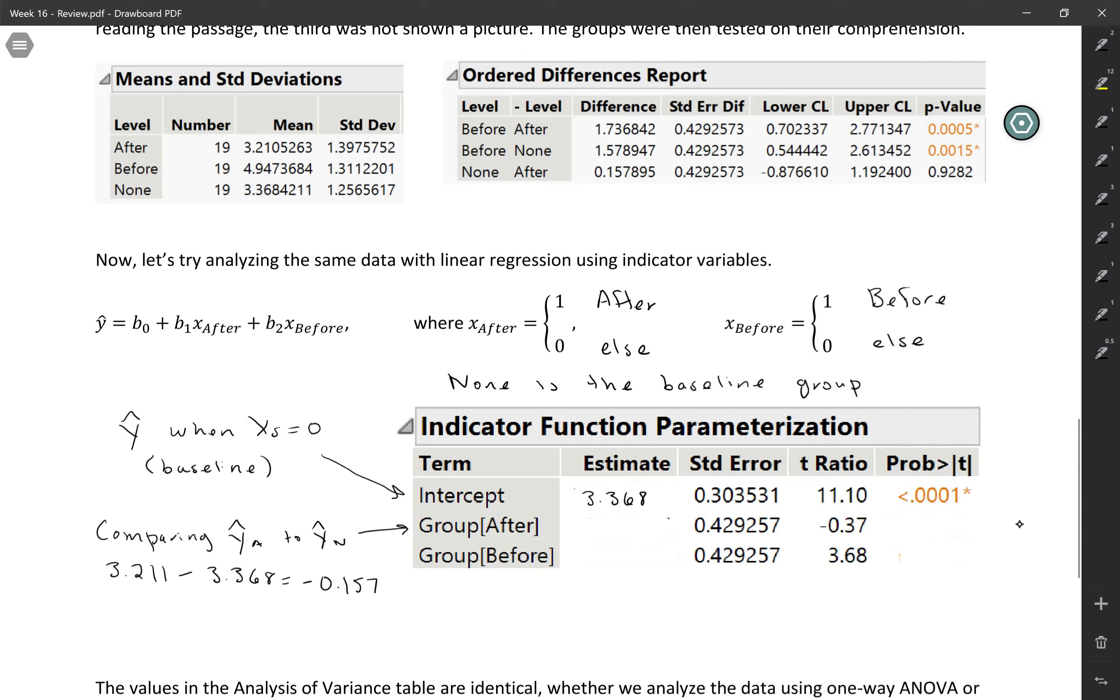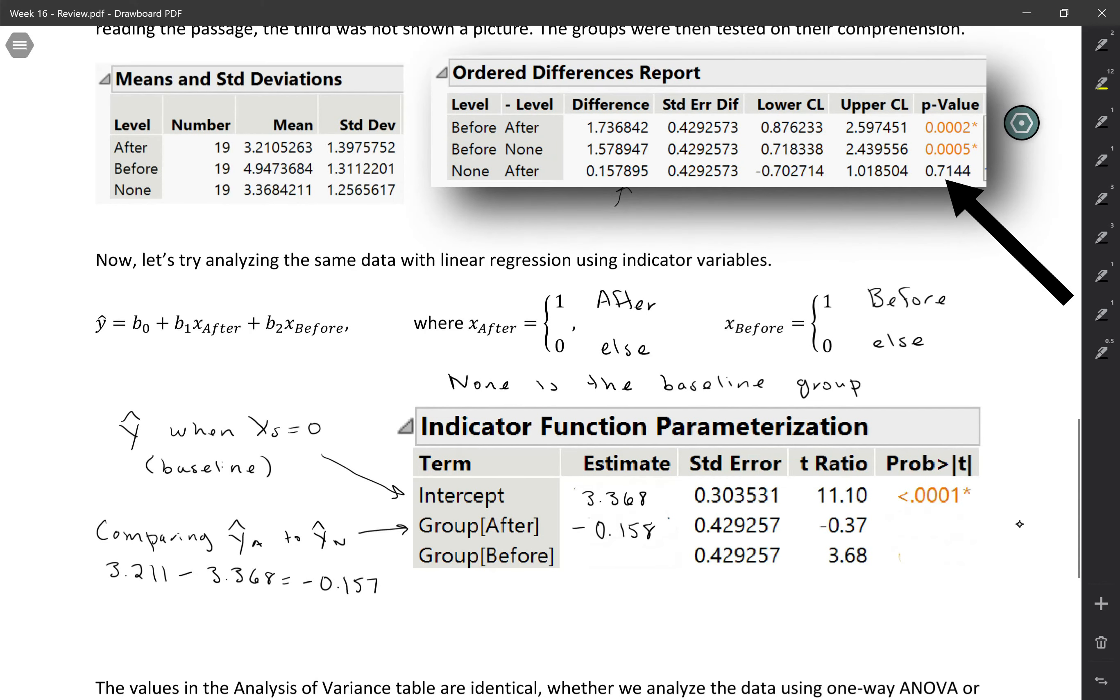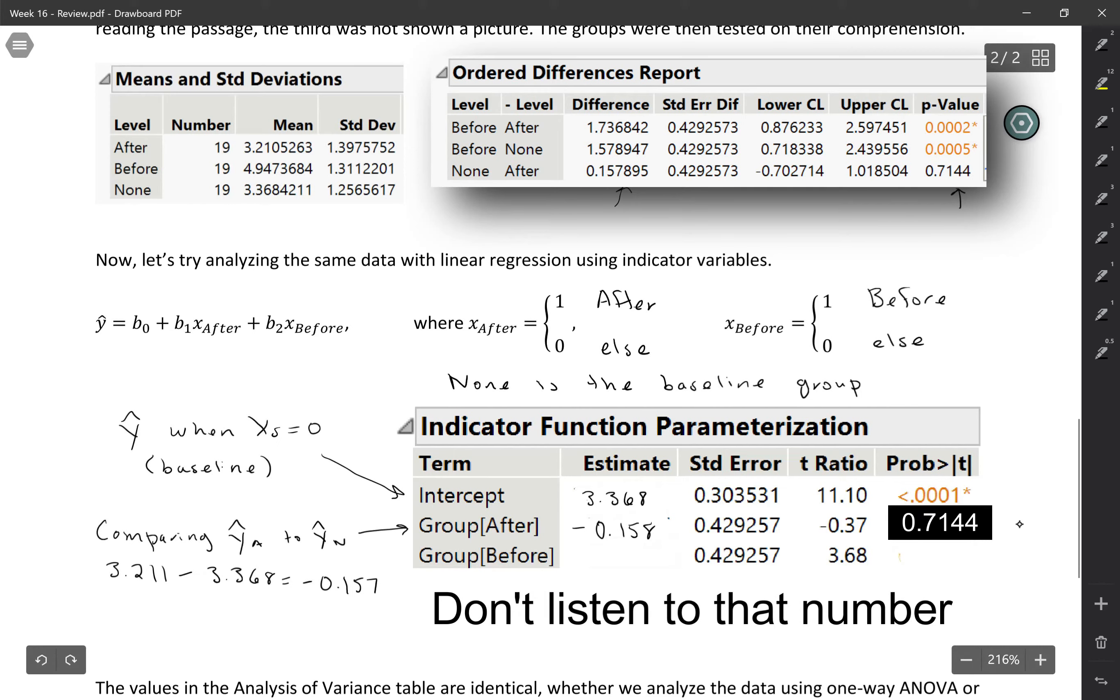And we get a difference of negative 0.157. And if we look, that's actually given to us up here in the ordered differences report, right? We're looking at the difference here. It's in the other order, none minus after. We did after minus none. But it is doing that number for us. And actually, I can see here that my rounding was off. So I'm going to go with theirs. I'm going to do negative 0.158. So this is telling me that as I go from the baseline group none to after, that my predicted comprehension score is going down by 0.158. And then I can also use this p-value. So that's testing the difference between none and after, which is exactly the comparison that I'm making with the slope for after. So the p-value here would be 0.9282. So not a significant difference whether you see the picture after or not at all.